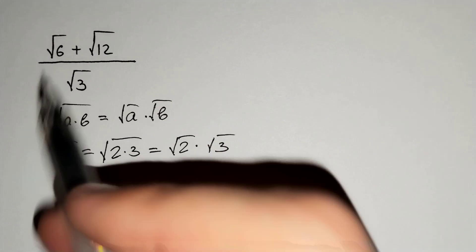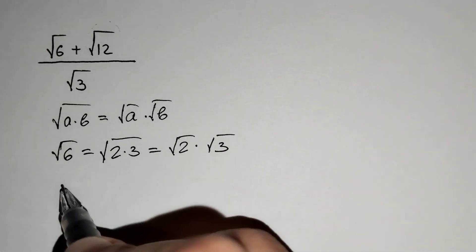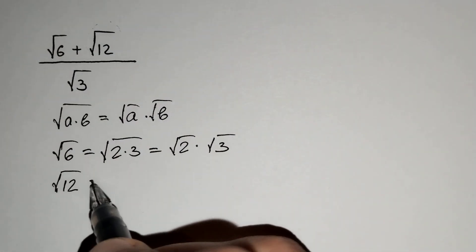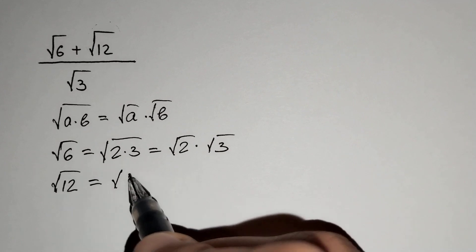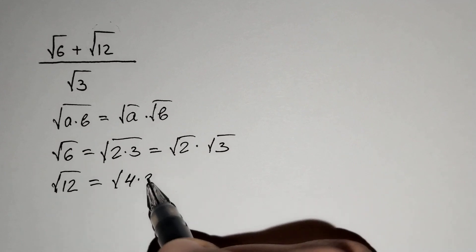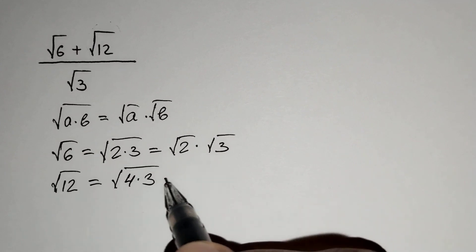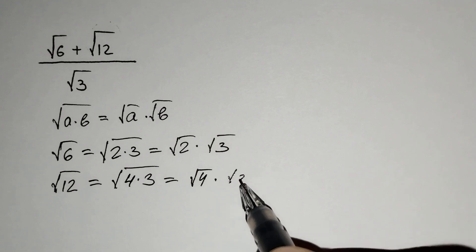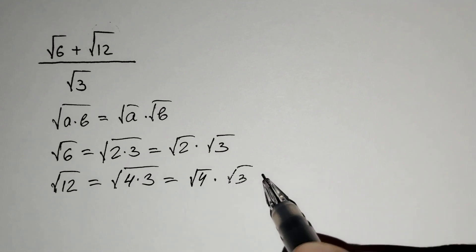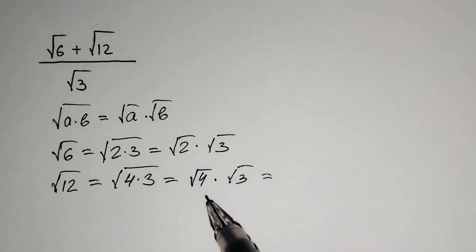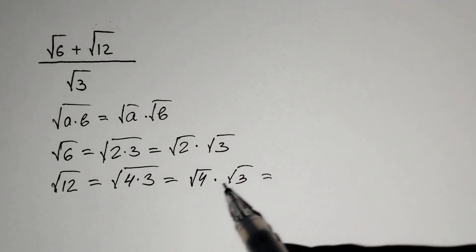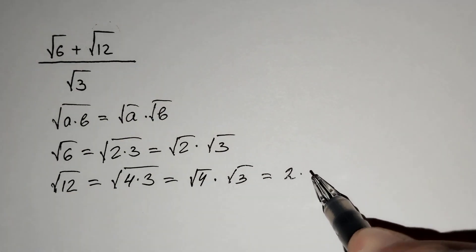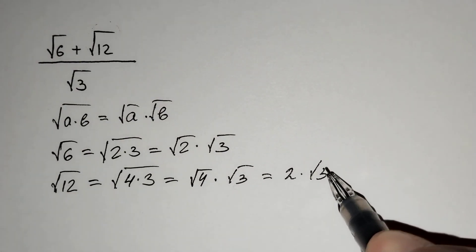And here, the square root of 12 equals the square root of 4 times 3, which equals the square root of 4 times the square root of 3. And since the square root of 4 equals 2, this gives us 2 times the square root of 3.